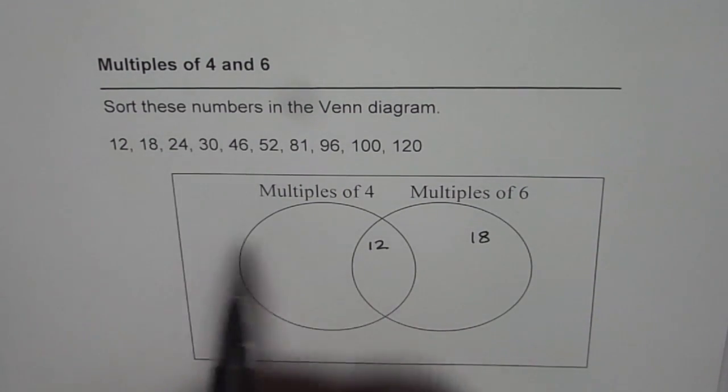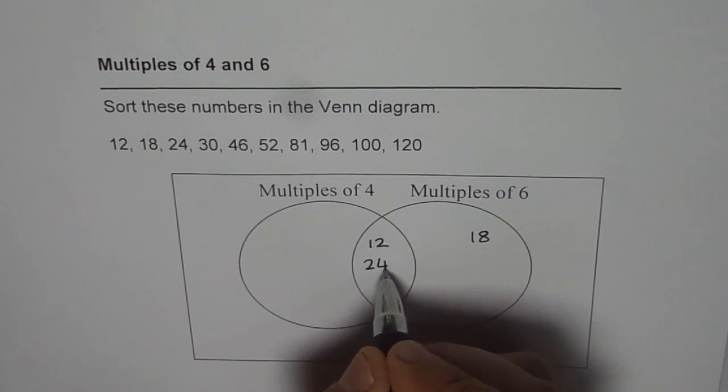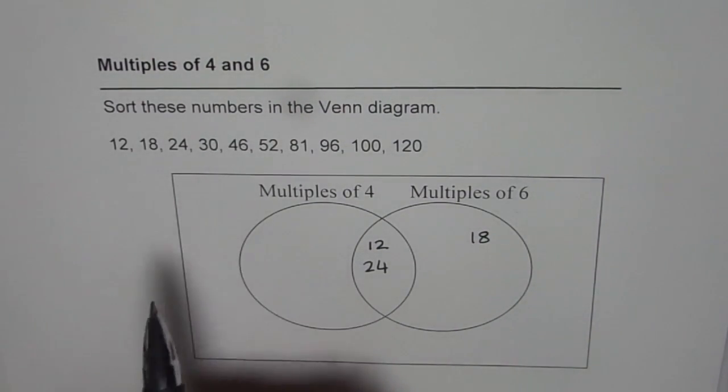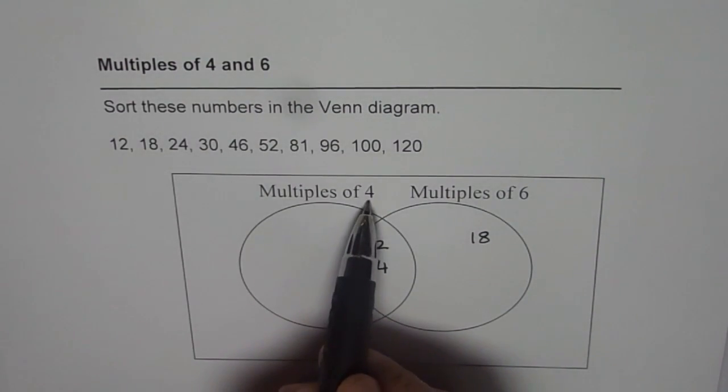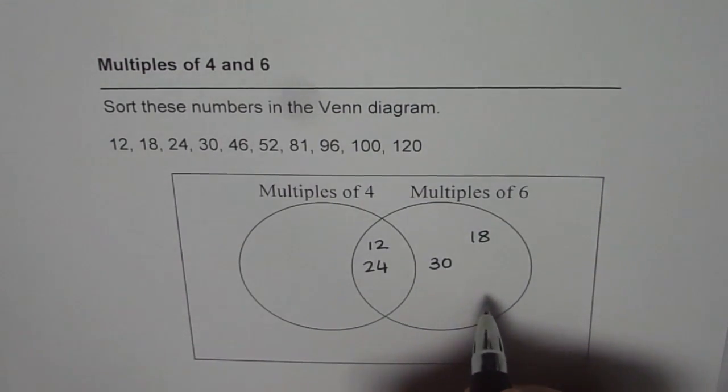24: 6 times 4 is 24, so 24 is a common multiple. It will come in the center. 30: 6 times 5 is 30, and 30 is not a multiple of 4. So 30 will go on the right side.